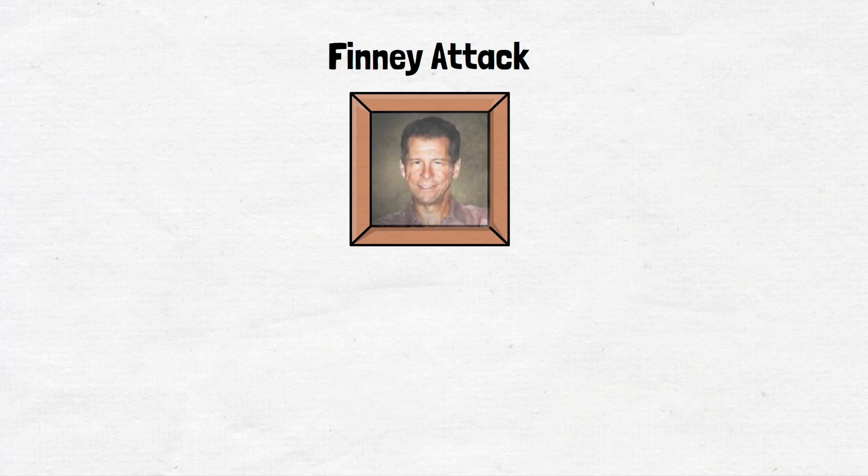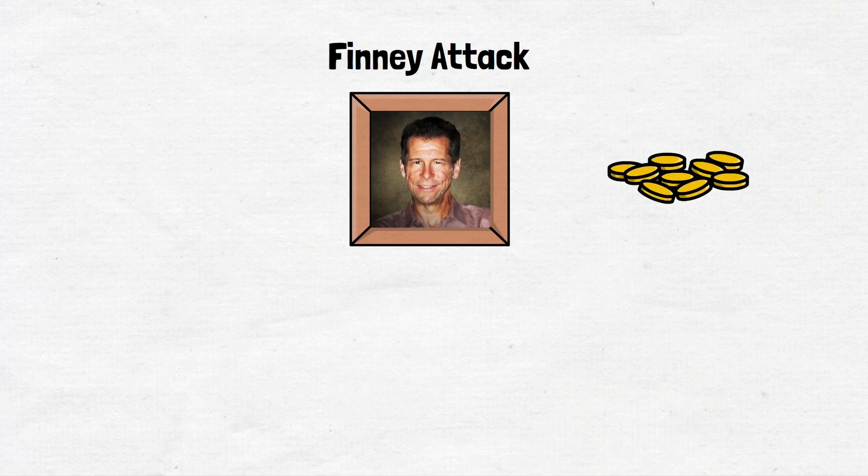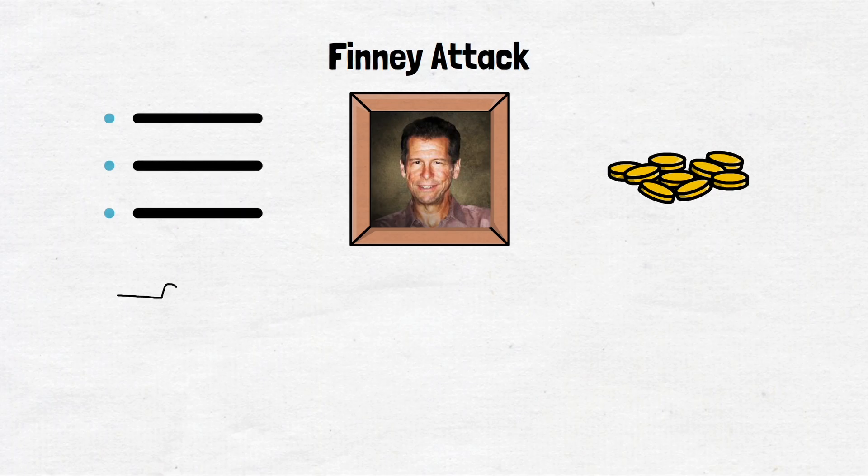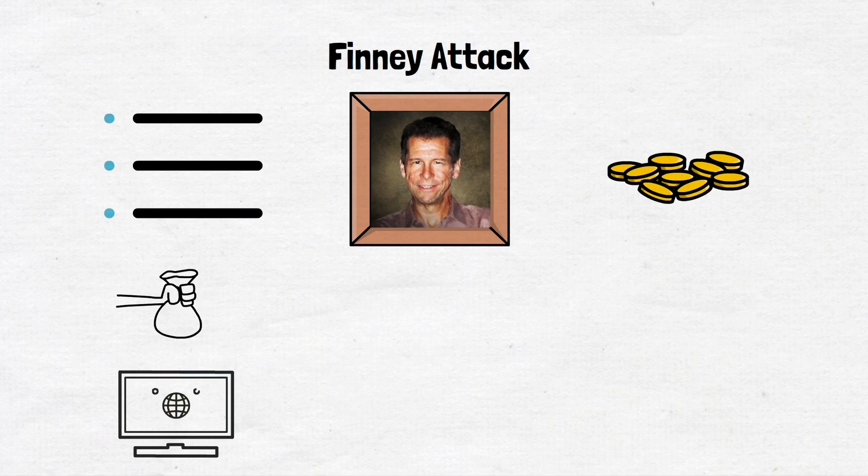First, Finney attack. This attack is named after Hal Finney. Hal Finney was one of the early Bitcoin contributors and the first person ever to receive Bitcoin from the creator Satoshi Nakamoto himself. Finney explained that a double spending attack could happen in three steps. First, the attacker performs a transaction in which he sends his coin to an address under his control. Once this action is performed, it begins mining a valid block in which the given transaction is included.